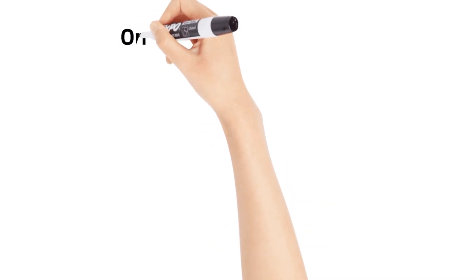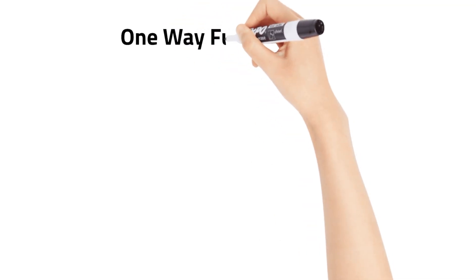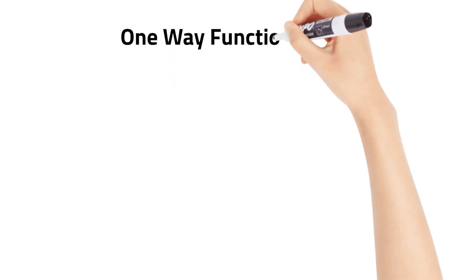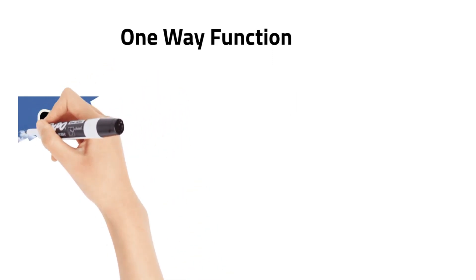Hi all, today we are going to see one-way function. It is a mathematical operation that easily produces output values for each possible combination of input values but makes it impossible to retrieve the input values.